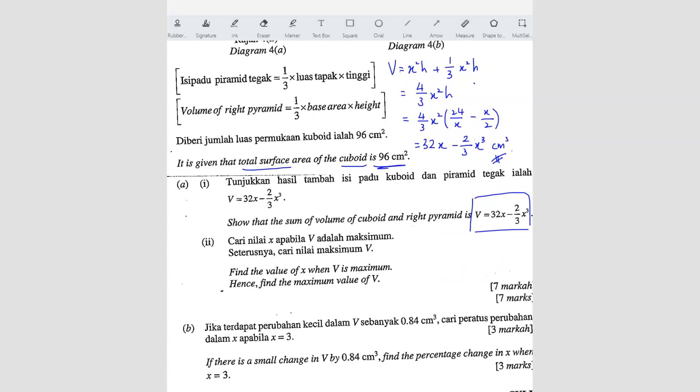Next, part A2. Find the value of x when V is maximum. When they say maximum, you know. Maximum means dV/dx = 0 because it's maximum volume. So you have to find dV/dx first. You have to differentiate this. So you get 32 - 2x², which equals to 0. From here, you know 2x² = 32. x² = 16.